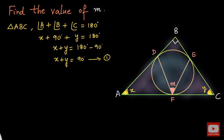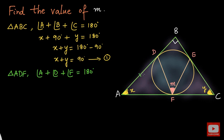Now I will go to triangle ADF and apply the same angle sum property. So angle A plus angle D plus angle F will be equal to 180 degrees. There is an interesting fact here: the length AD is equal to AF. Why are they equal? Because they are tangents drawn from the external point A to this circle.